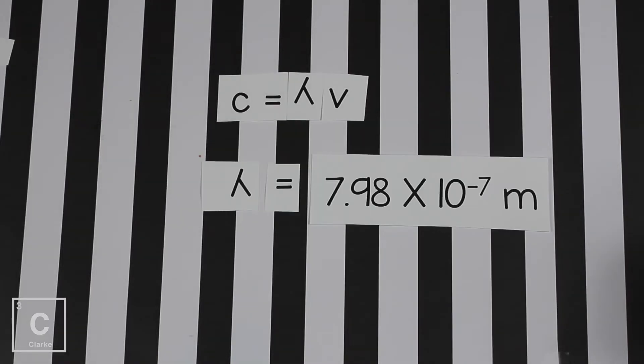When we put this in the calculator, we get the answer to be 7.98. Three sig figs because our given number had three sig figs. 7.98 times 10 to the negative 7 meters.